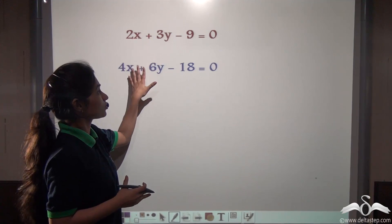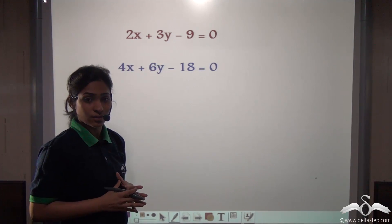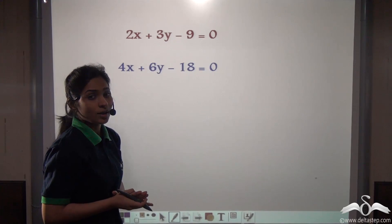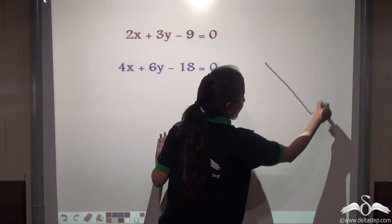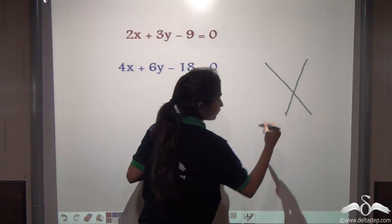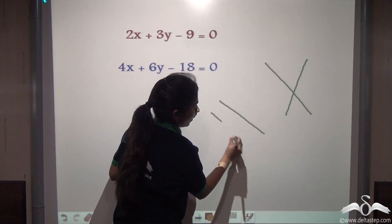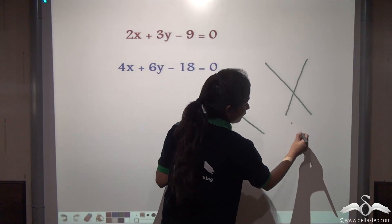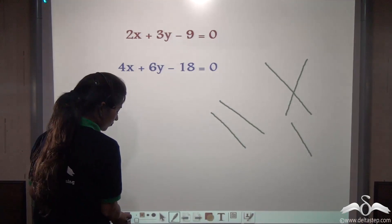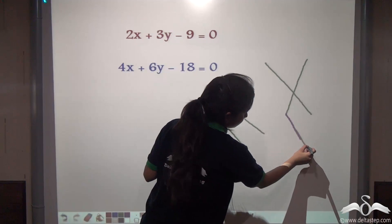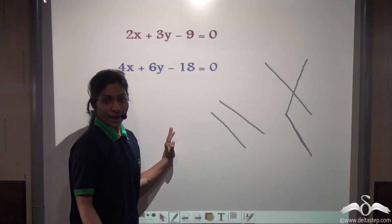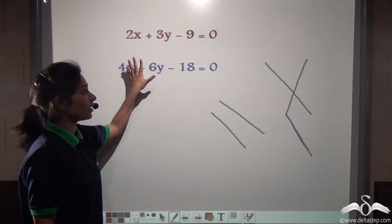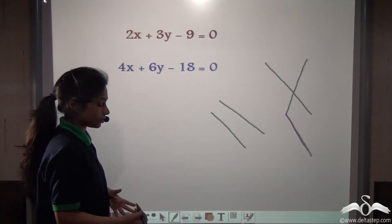Well, we see these two equations here. Let's see when we graph them what do we get. Now every time the lines cannot be intersecting. What if the lines are parallel, or what if the lines coincide with each other? Well, there can be times like this. Let's see what we get when we graph these two equations.